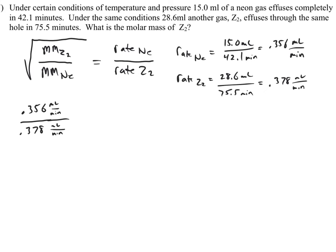Double check to make sure that I have neon on top. I do. Okay. So I'm going to square both sides of my equation here. That's going to equal the molar mass of Z2, whatever that is, divided by the molar mass of neon, which is 20.18 grams per mole.